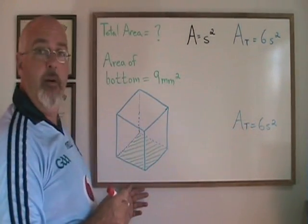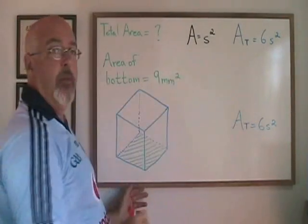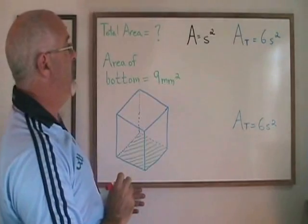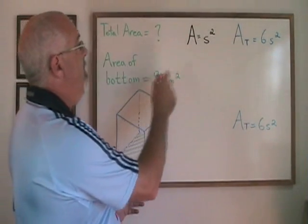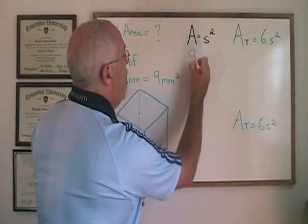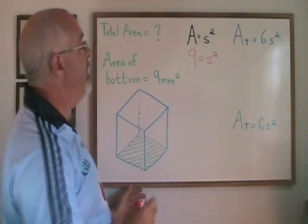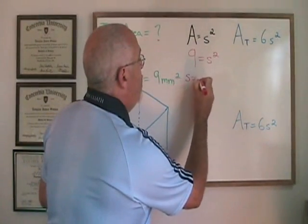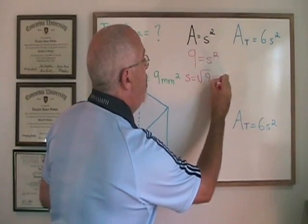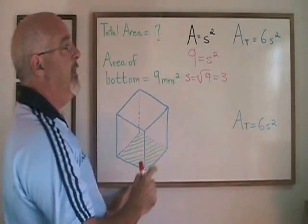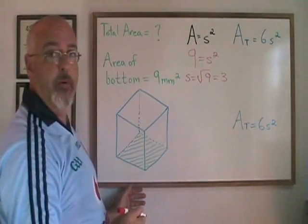Well the bottom is a square and the area of a square formula will apply so I can find the side length using this formula. If the area of the bottom is 9 my A is replaced by a 9. We have 9 equals s squared. S will therefore be equal to the square root of 9 which is 3. And now I can plug that side length of 3 into the area total formula.